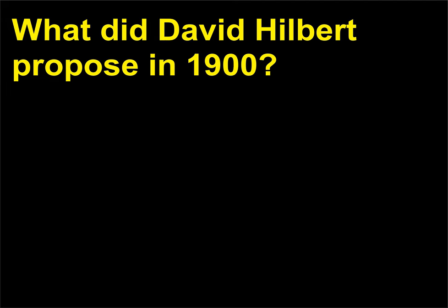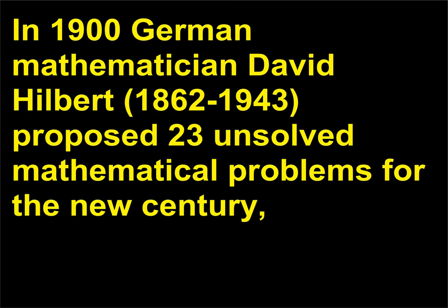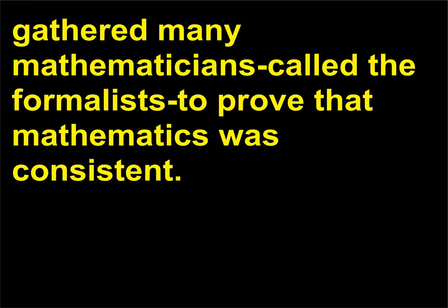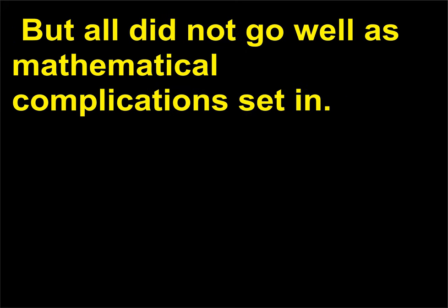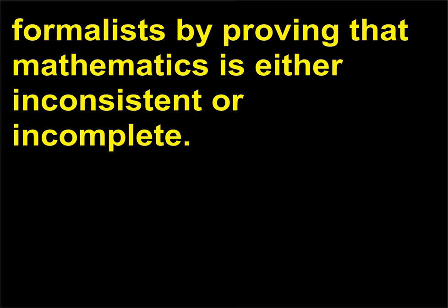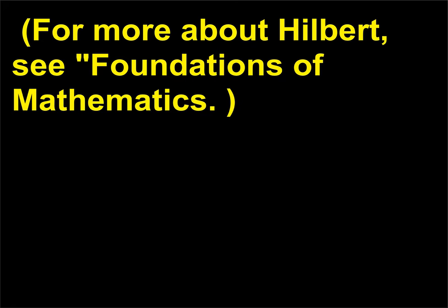What did David Hilbert propose in 1900? In 1900, German mathematician David Hilbert (1862–1943) proposed 23 unsolved mathematical problems for the new century, most of which only proved to bring up other problems. By the 1920s, Hilbert gathered many mathematicians called the formalists to prove that mathematics was consistent, but all did not go well as mathematical complications set in. By 1931, Kurt Gödel's incompleteness theorem dashed any more efforts by the formalists by proving that mathematics is either inconsistent or incomplete.